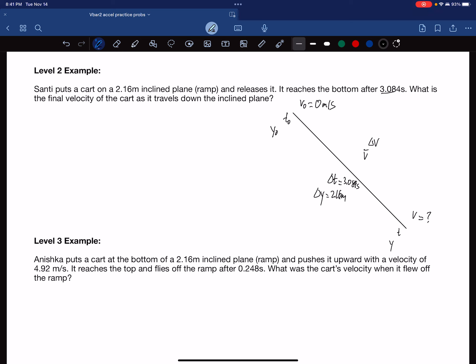We could say if the change in time is 3.084, the starting time could be zero, and that means the ending time is 3.084. And if the change in position is 2.16, then the starting position could be zero, and the final position could be 2.16 meters. But we're looking for this change in velocity, or the final velocity. So let's look at the formulas we have. Average velocity is delta Y over delta T. And average velocity is V plus V zero over 2.